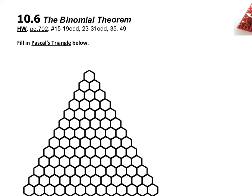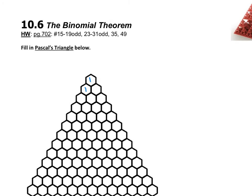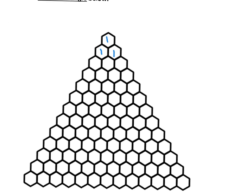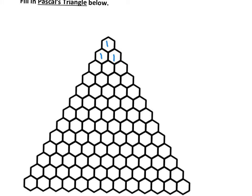You start with a 1 at the top, and then 1s in the next row. The outsides are always going to be 1s. The way you get inside numbers is by adding the numbers above it. So this blank spot here, above it to the left and right, we see 1 and 1. So 1 plus 1 makes 2, so we put a 2 here.